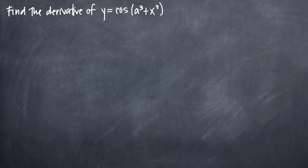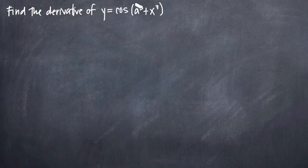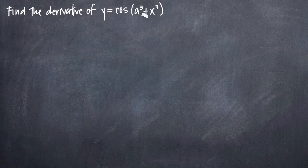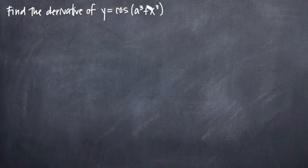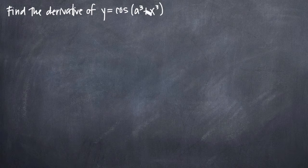In this particular problem, we've been asked to find the derivative of the function y equals cosine of the quantity a cubed plus x cubed. In this problem, we should assume that a is a constant — not another variable like x, it's a constant. You could almost imagine it as a real number like 2. If a were 2, then you'd have 2 cubed, which would be 8, and you could treat this whole thing as a constant 8. So let's keep in mind that a is a constant.